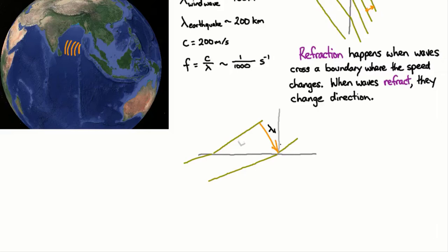And that distance is the wavelength. So that's wavelength 1 for the wave when it's going at speed c1. And when it's going at speed c2, it's going to have a different wavelength, wavelength 2.